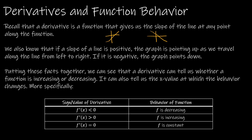For our first fact, we're going to look at the sign of a derivative telling us about the behavior of the function. If the derivative is less than 0, the function is decreasing because the slope is negative. If the derivative is greater than 0, then f is increasing because the slope is positive. If the slope equals 0, f is constant — typically seen as those zero tangent lines on a graph.